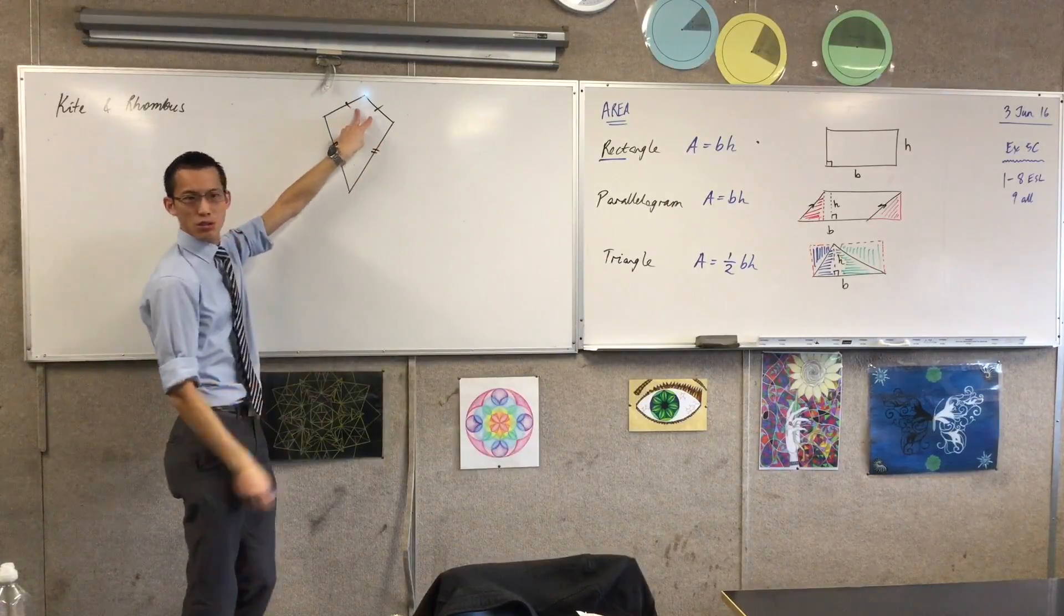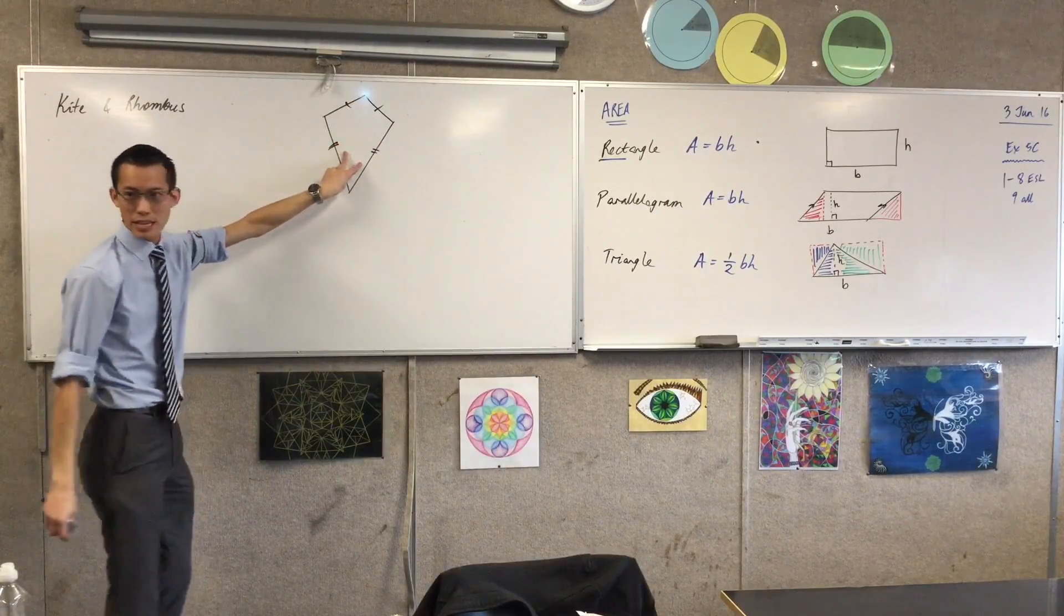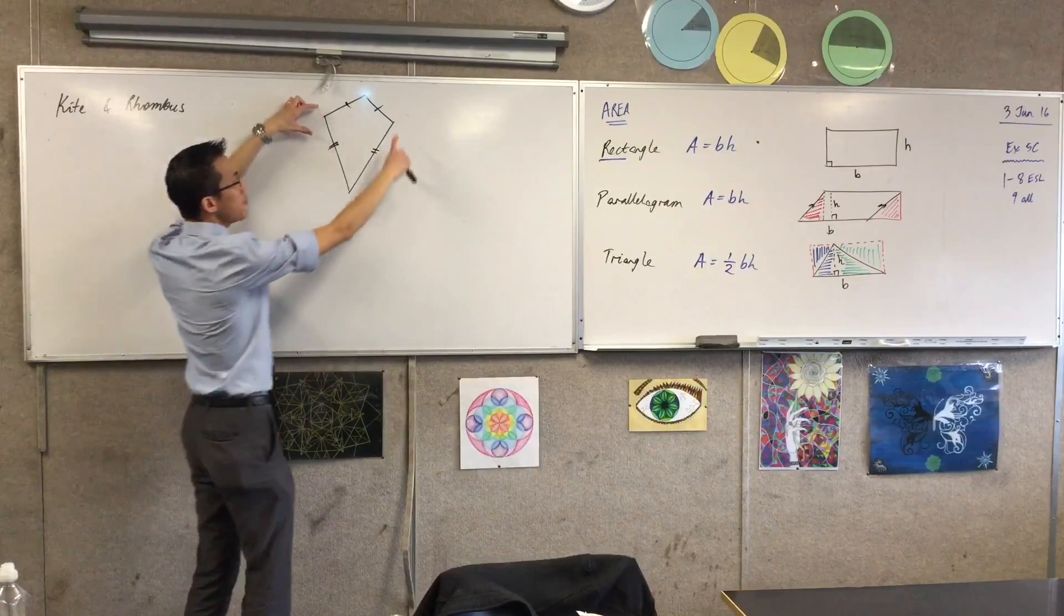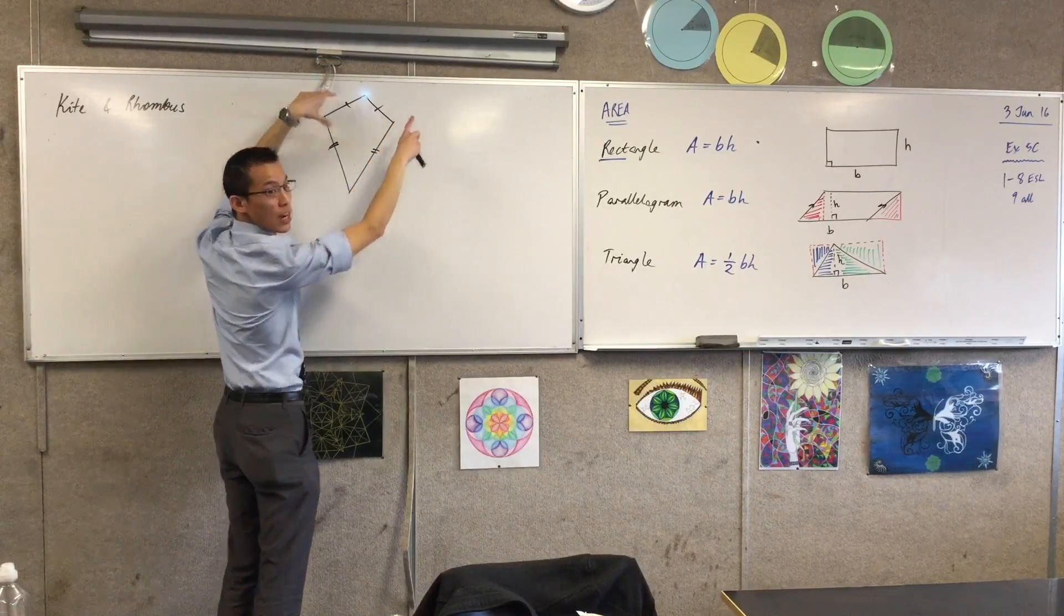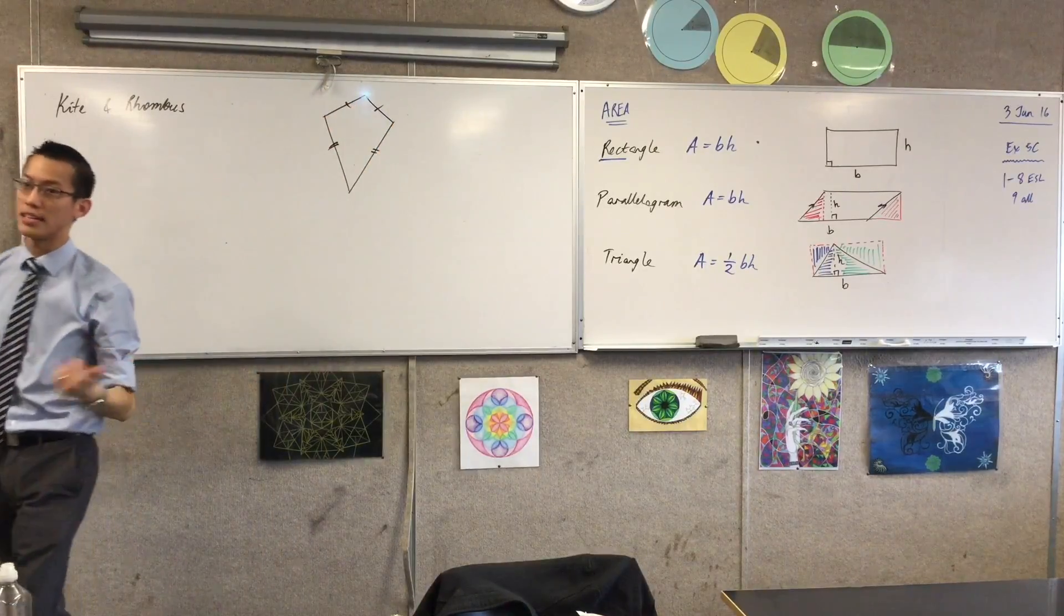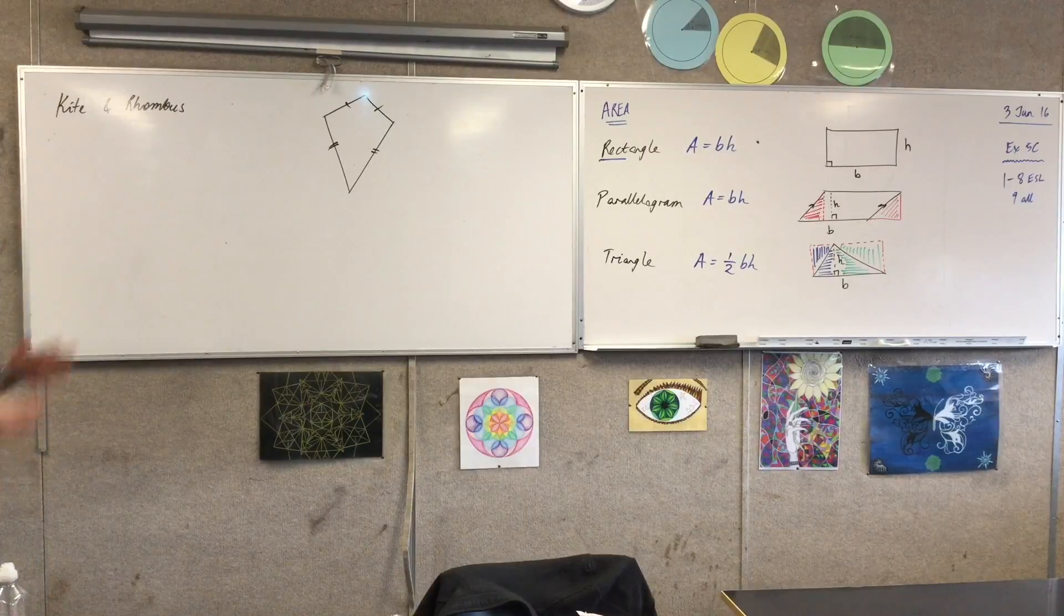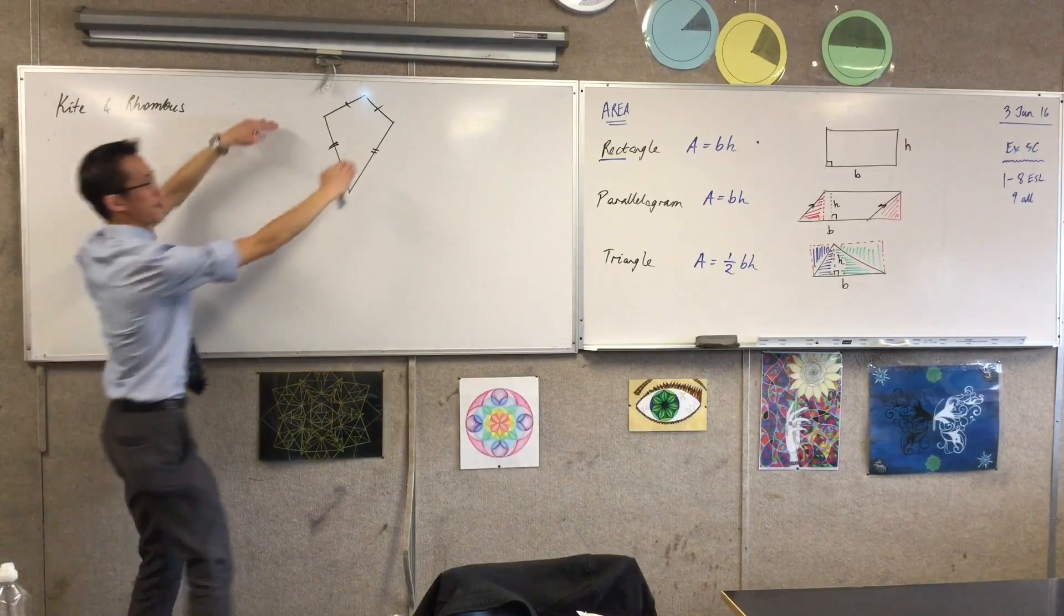Instead of just having these two equal and these two equal, if you make these pairs equal to each other as well, you've turned your kite into a rhombus. Now, don't draw it. You don't need to. It's going to look exactly the same. Just move down a little bit.